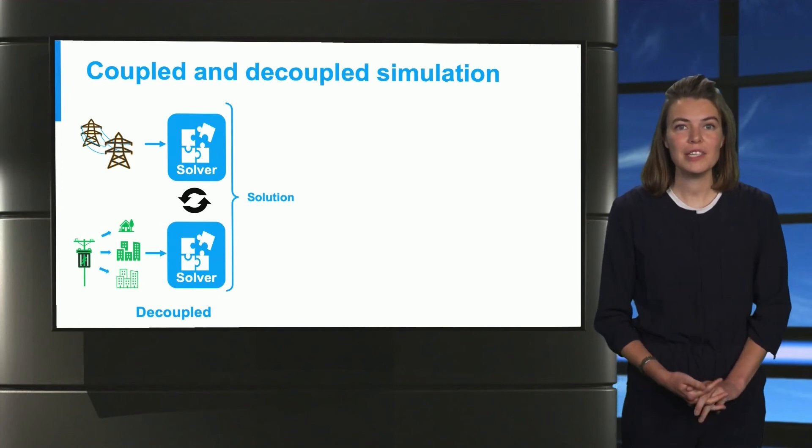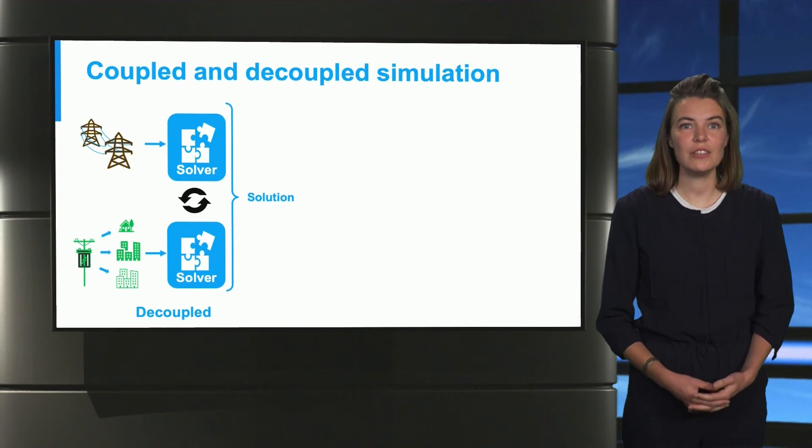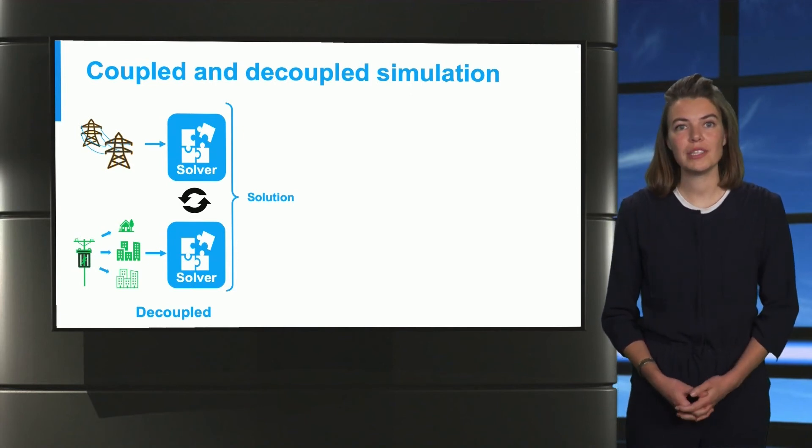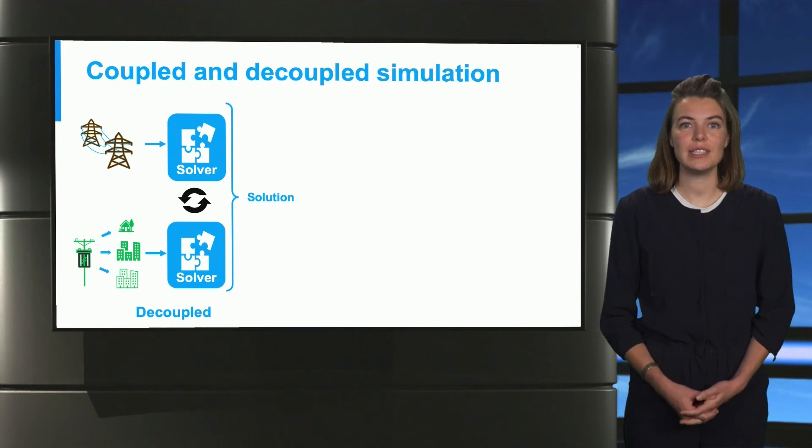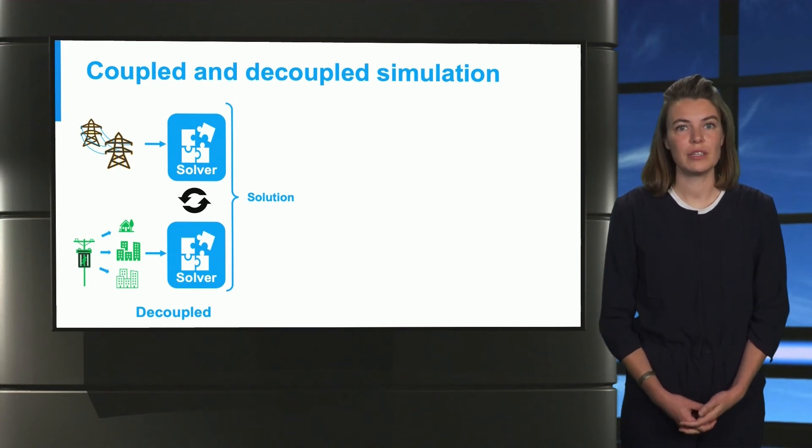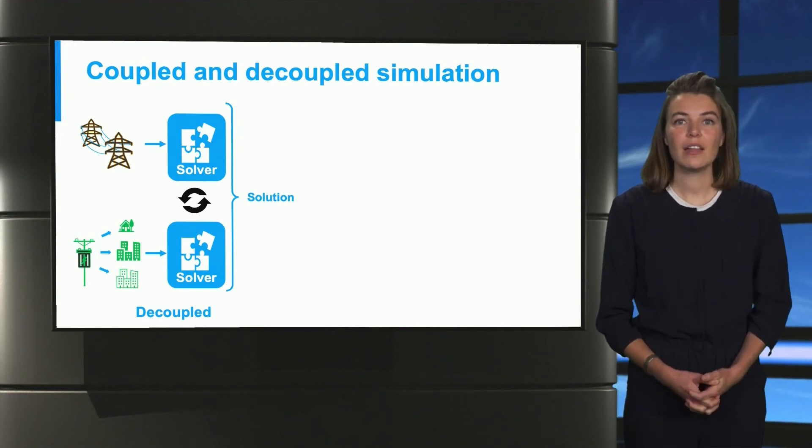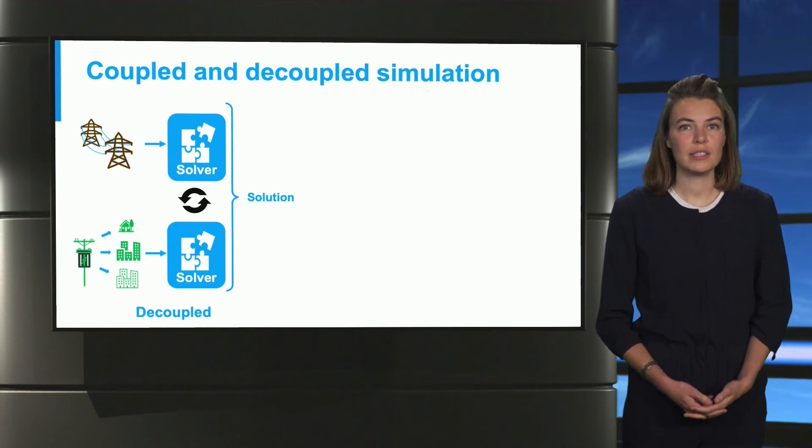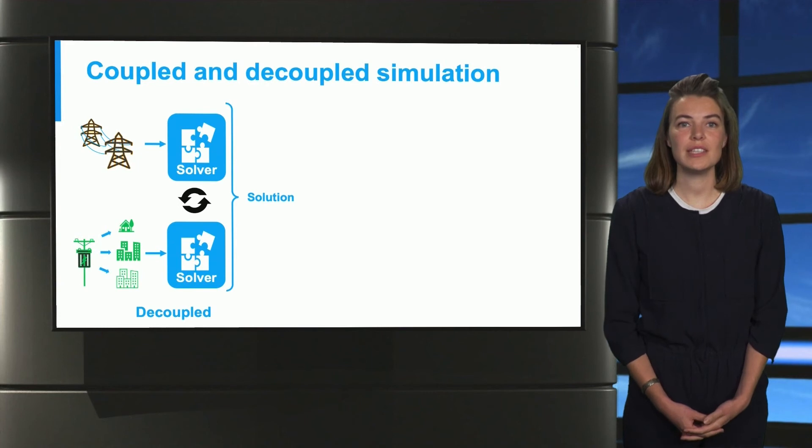The electrical transmission and distribution networks go separately into their own solvers and then iterate to know what happens. For example, the information from a transmission network is sent to the distribution solver. Then the distribution part is solved and the obtained solution is sent back to the transmission solver. This is done a couple of times until we get a certain convergence, or in other terms, until the solution is satisfactory.